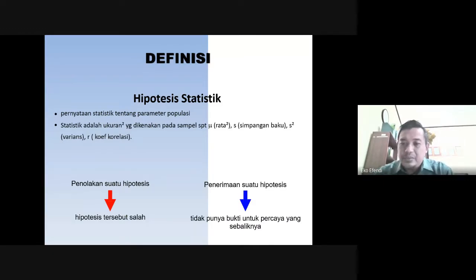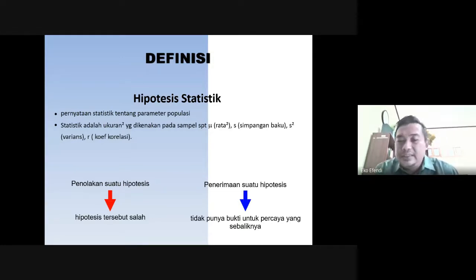Dalam kaitannya dengan populasi, ada beberapa ukuran yang digunakan dalam menjelaskan sebuah populasi tersebut: ada nilai rata-rata (mu), kemudian ada simpangan baku, kemudian ada varians, dan kemudian ada koefisien korelasi. Mungkin kita hanya membahas tentang rata-rata dan simpangan baku atau standar deviasi. Terkait dengan varian dan koefisien korelasi nanti dijelaskan di materi yang lebih detail terkait dengan uji hipotesis selanjutnya.